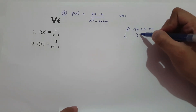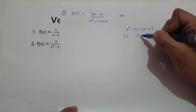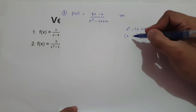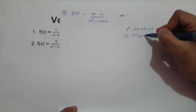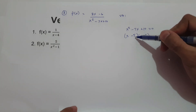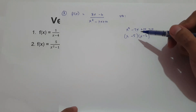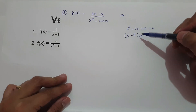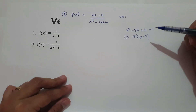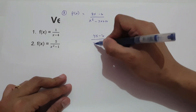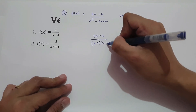The factor of x squared is x and x. For the constant 10: if you multiply you get positive 10, and if you add you get negative 7 — so that is negative 5 and negative 2. Negative 5 times negative 2 is positive 10, and negative 5 plus negative 2 is negative 7. So we substitute x squared minus 7x plus 10 with x minus 5 times x minus 2. Let us rewrite the function as 3x minus 6 over x minus 5 times x minus 2.